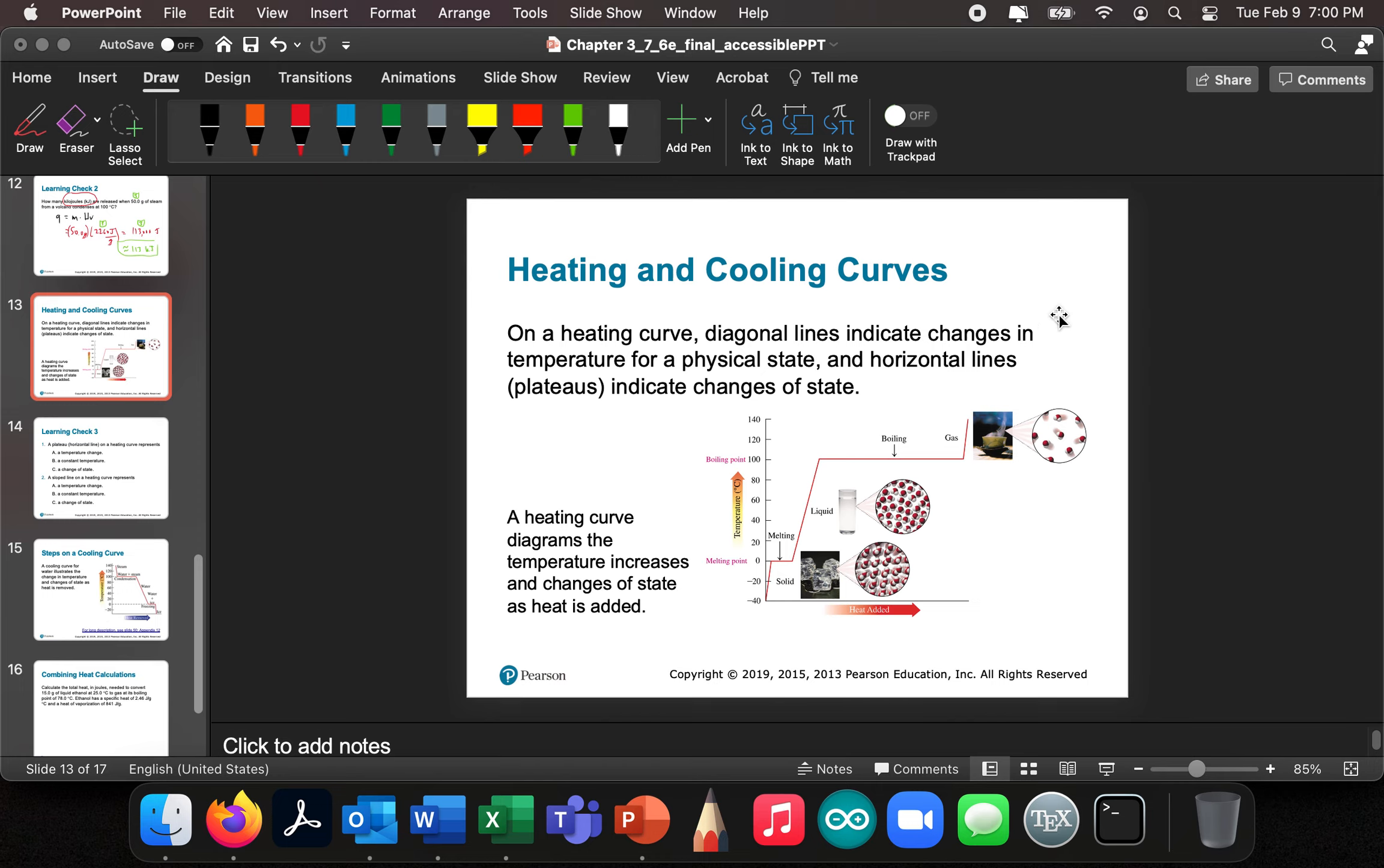Okay, so now we're going to put all this information together in something we're going to call a heating and a cooling curve. So on a heating and cooling curve, diagonal lines indicate changes in temperature for physical state, and horizontal lines indicate changes.